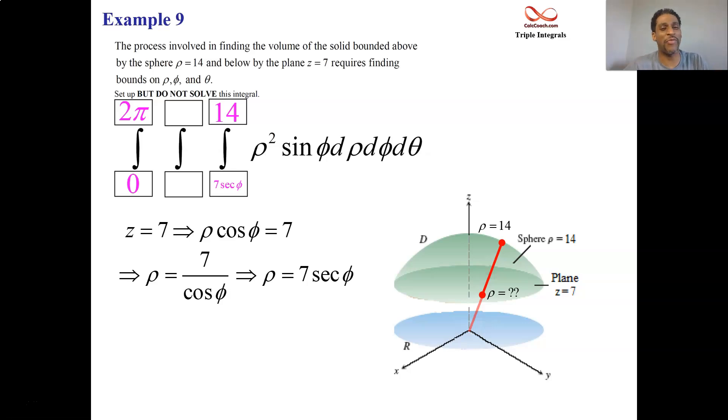Lastly, we have to figure out what's going on with phi. So phi starts at zero, the positive z-axis. But then phi comes down and stops. What does phi stop at? Phi stops at the intersection between the plane and the spherical cap.